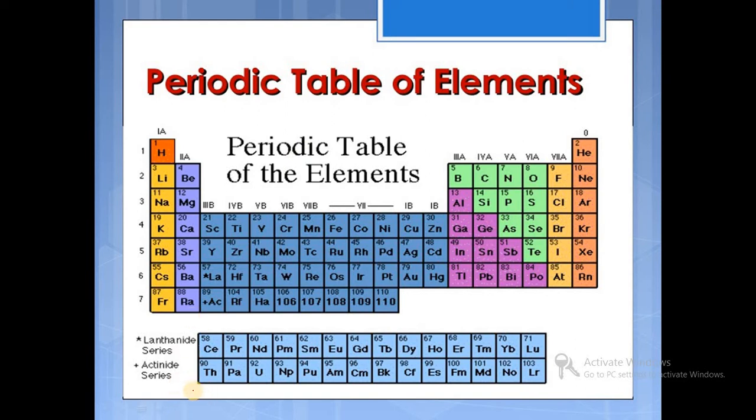In the case of actinide series, the actinide series is the group of 15 elements which starts from actinium, atomic number 89, and ends with lawrencium, atomic number 103. This is the group of 15 elements which are called actinide series or 5f series.